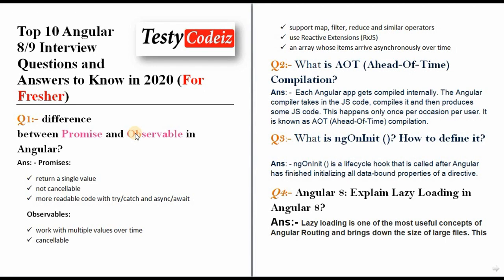The fourth point: Observables use reactive extensions — RxJS. If you have heard of it, that is perfect; if you haven't, then listen — this is the most important thing in Angular 8 and 9. And the last point is that an Observable is an array whose items arrive asynchronously over time.